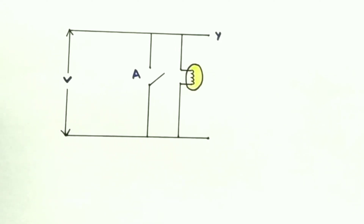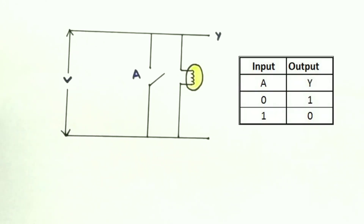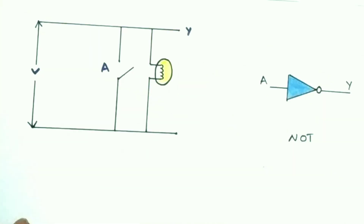When the switch is closed, the bulb will not glow because the current is going to ground. So when the switch is open (A = 0), Y = 1, and when A = 1, Y = 0. This circuit is acting like a NOT gate.